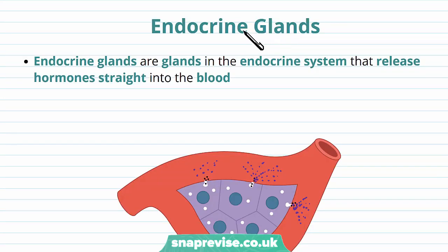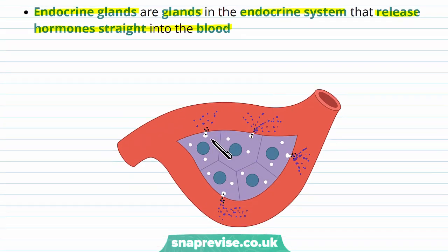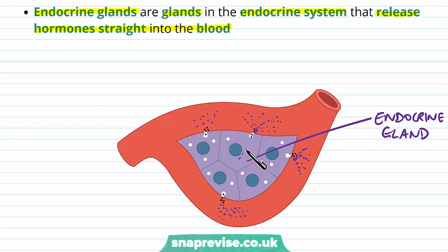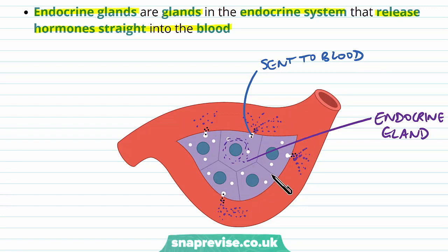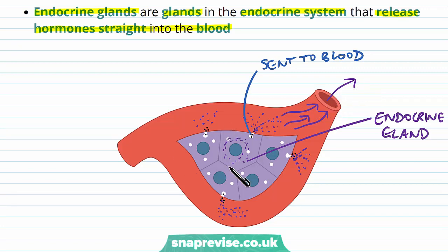The hormonal system works on glands, and in particular we're talking about endocrine glands — the glands in the endocrine system which release hormones right into the blood. Using a diagram to illustrate this: these cells make up an endocrine gland, and what they do is produce and manufacture the hormone to send out to the blood. They send the hormone directly into the bloodstream, and usually these endocrine glands are surrounded by blood capillaries so they don't have to travel far. Once the hormone is in the blood, it can travel with the bloodstream to many places in the body.